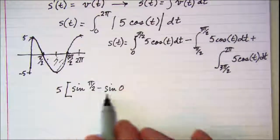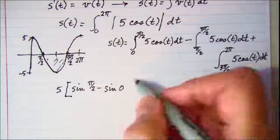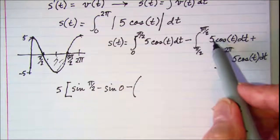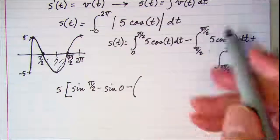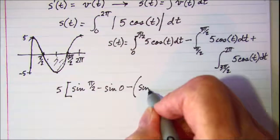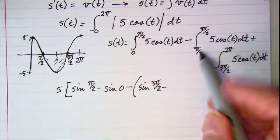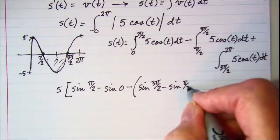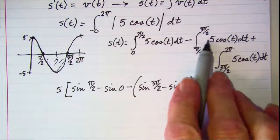This part is my first integral and then I need to subtract. I pulled my 5 out already. So I have the sine of 3 pi over 2 minus the sine of pi over 2. This is my second integral.